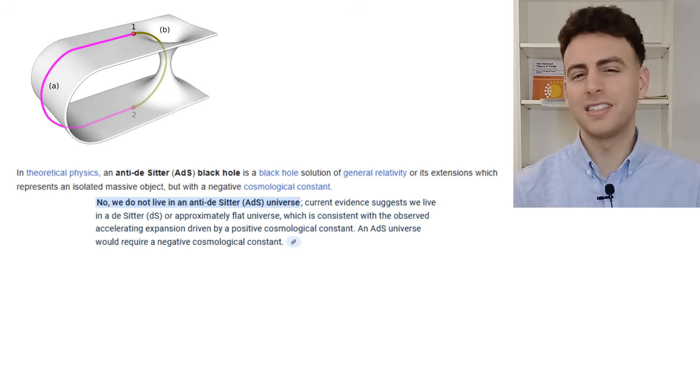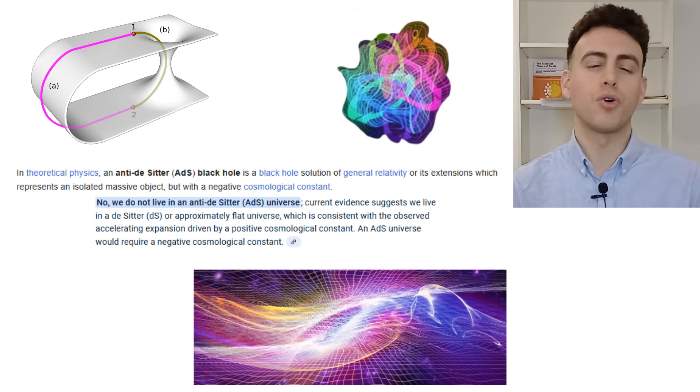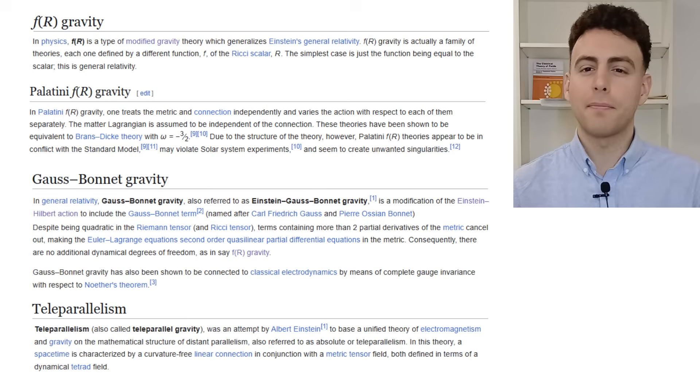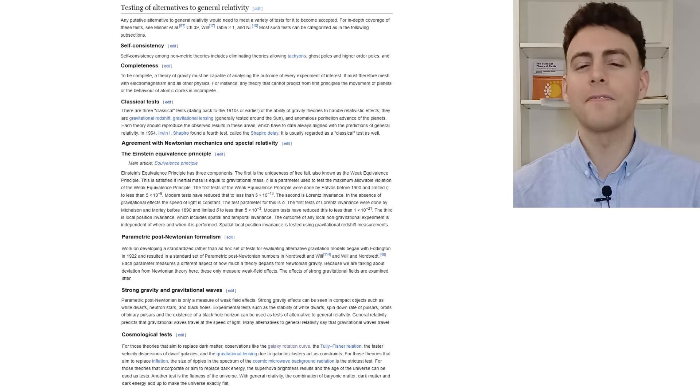But there are no wormholes, anti-de Sitter black holes, strings or quintessence fields as far as observations show. F of r, Palatini or teleparallel gravity are not better than general relativity to describe any natural phenomena we know about in a consistent way.